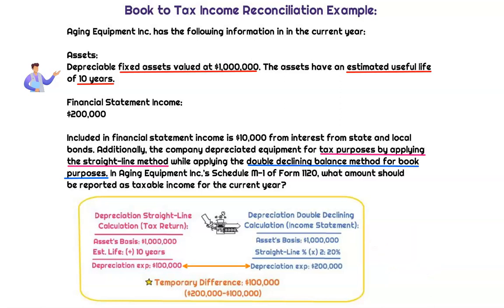When we calculated our $200,000 net income amount, we took a $200,000 depreciation expense when getting there. We also know that we took a $100,000 depreciation expense when calculating taxable income. So that discrepancy amounts to $100,000, and that's a temporary difference — because eventually this $1 million asset is going to be depreciated down to zero.